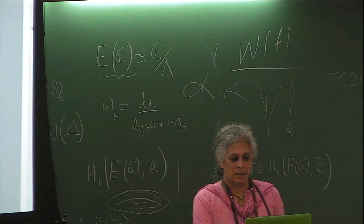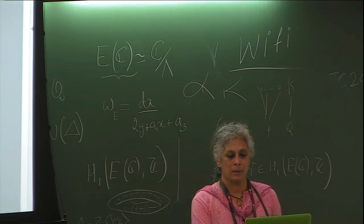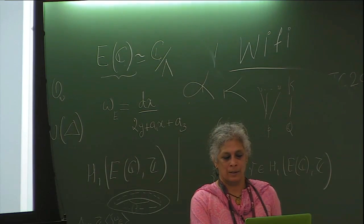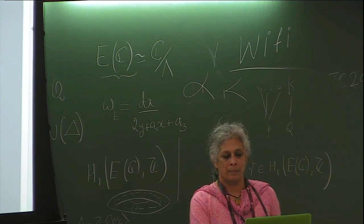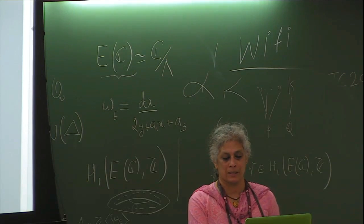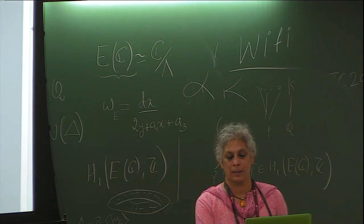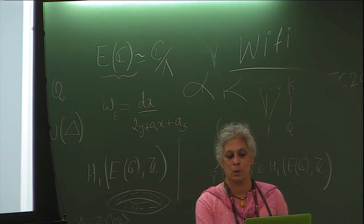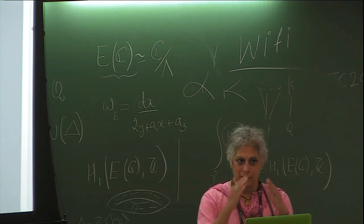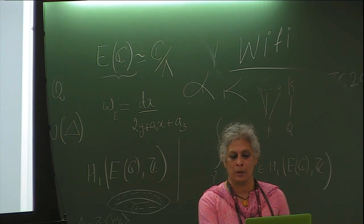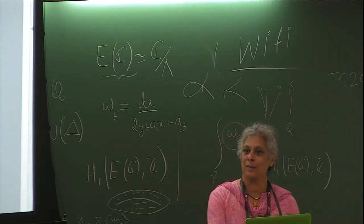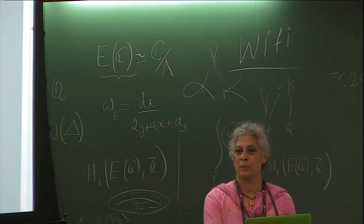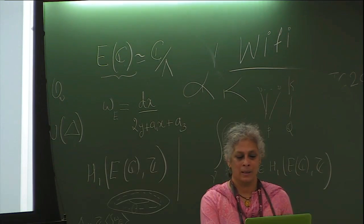Now the regulator mixes the real and complex embeddings. I'll be brief here — this will take a whole lecture by itself. In arithmetic geometry, once you have points over special fields like C, R, or K_v, those fields have additional structure: the complex numbers have an absolute value and a conjugation, real numbers have an absolute value, and local fields have a valuation. You use this additional structure to understand the solutions.